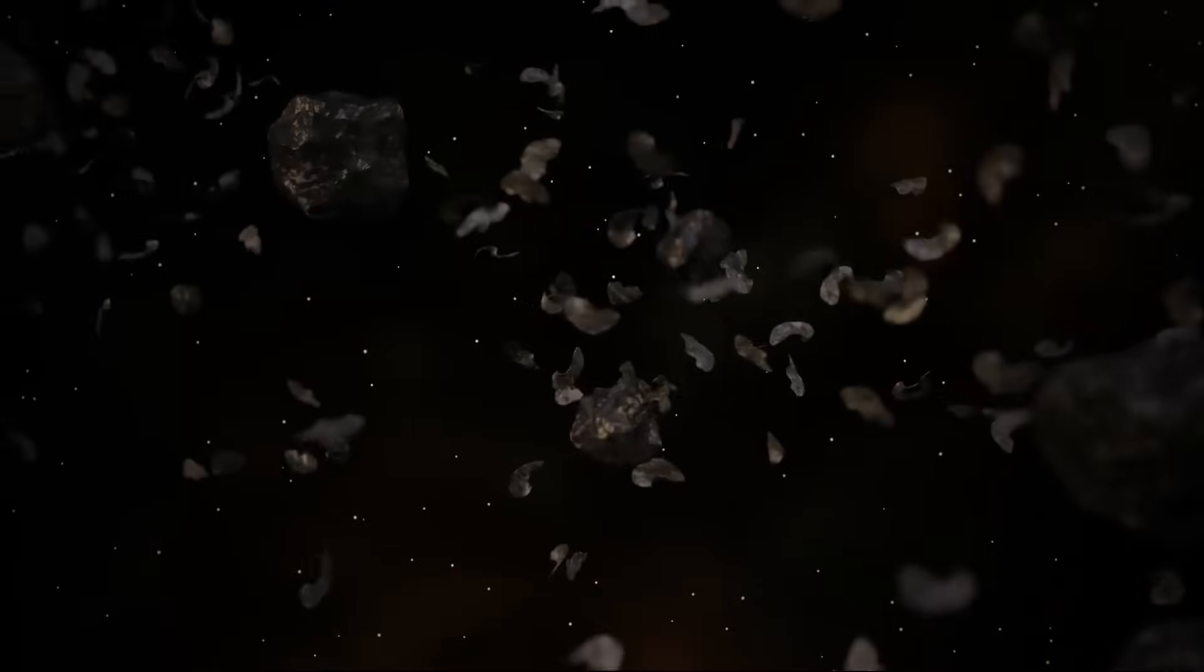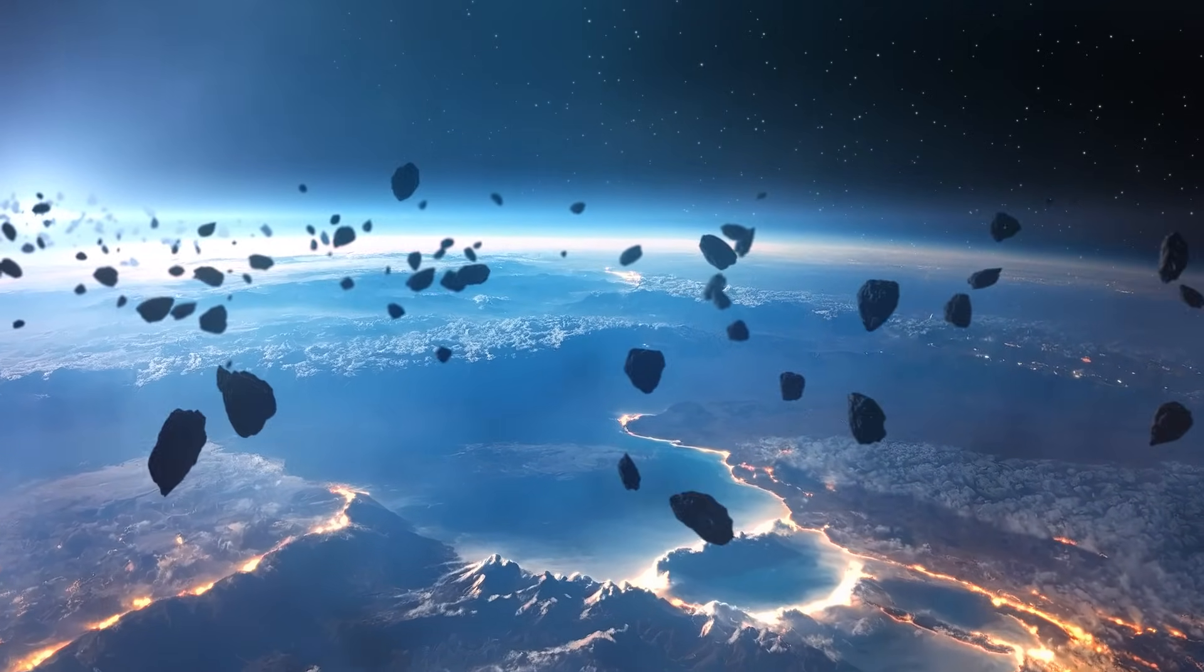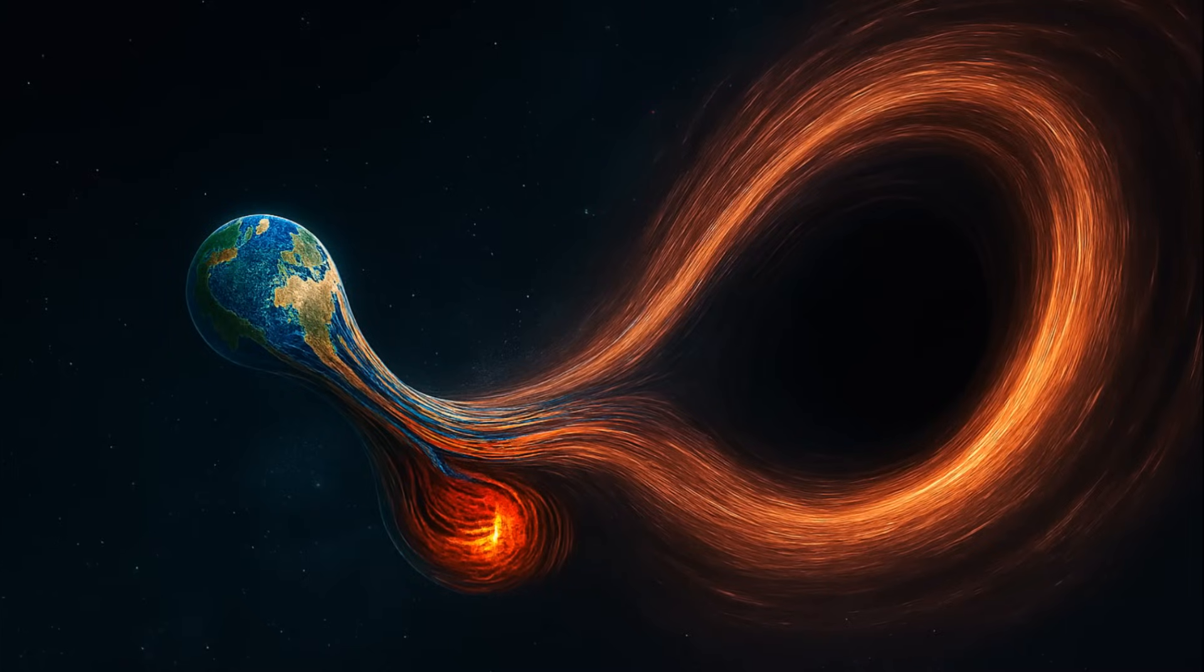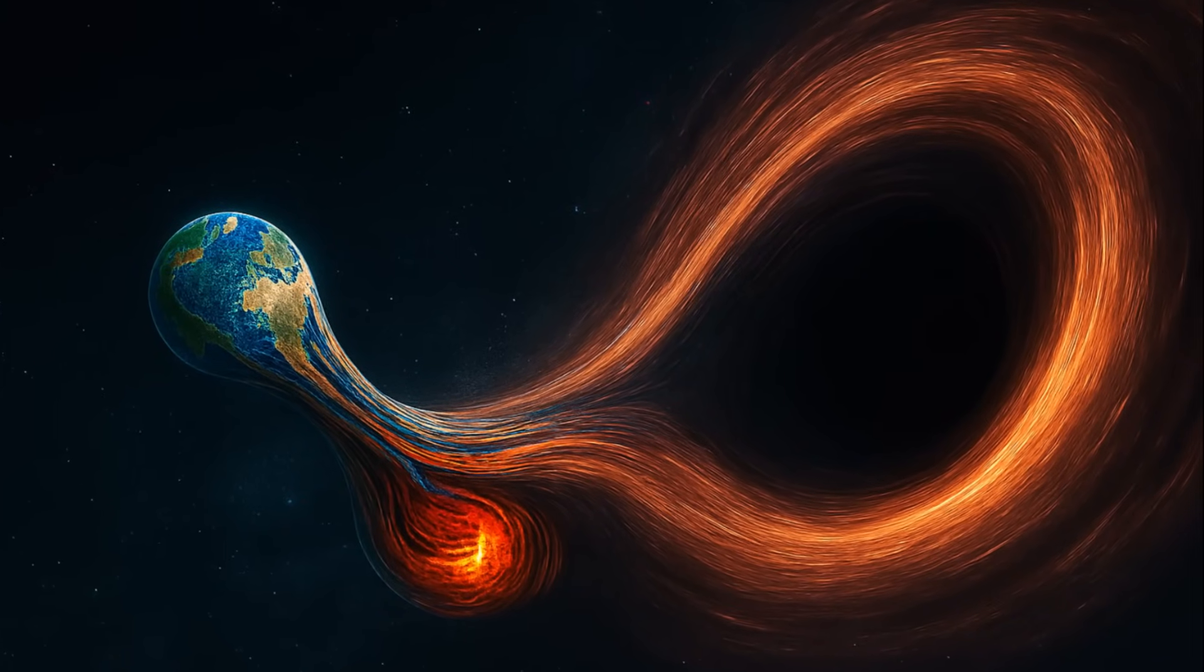Satellites and space junk spiral out of orbit. Some crash back to Earth. Others drift into unstable paths. As we draw closer, Earth's crust and core twist like dough under a baker's hands.